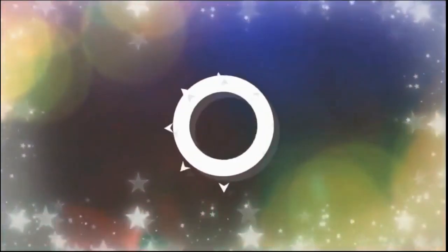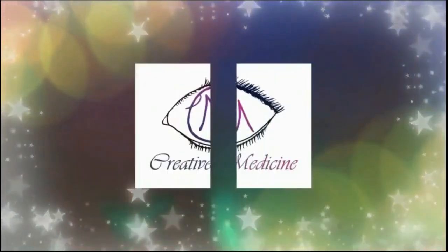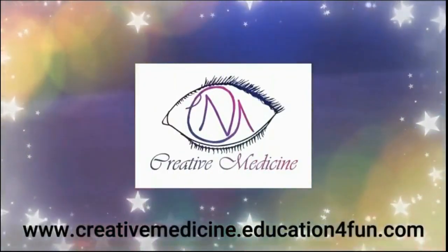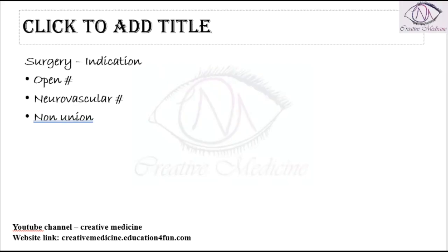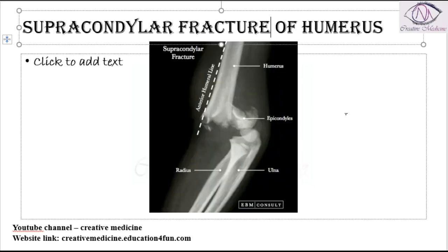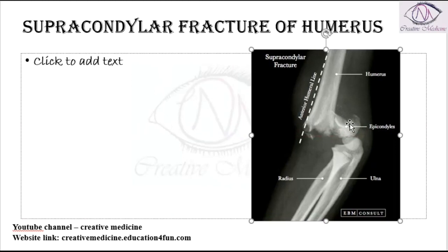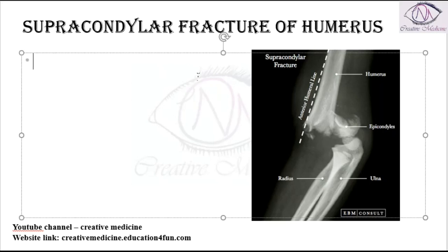Hello friends, welcome to Creative Medicine. In this lecture, we will learn about supracondylar fracture of humerus. Supracondylar fracture of humerus occurs whenever there is a fall on an outstretched hand or fall on a hyperextended elbow. It is the most common cause of fracture on fall on outstretched hand in children, and is most commonly seen in children less than 10 years of age.